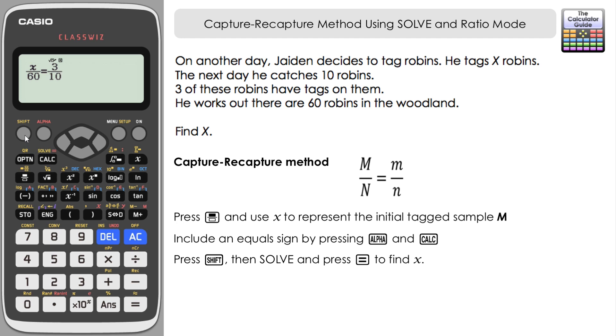We can still see the 275 is in there from our previous question, so just press equals again. And here we have a result for how many were initially tagged—this is from the capture, the first capture—that there were 18 robins that were initially tagged. Now there is an alternative method we could use. We could use ratio mode from the ClassWiz to help us solve this if we prefer.